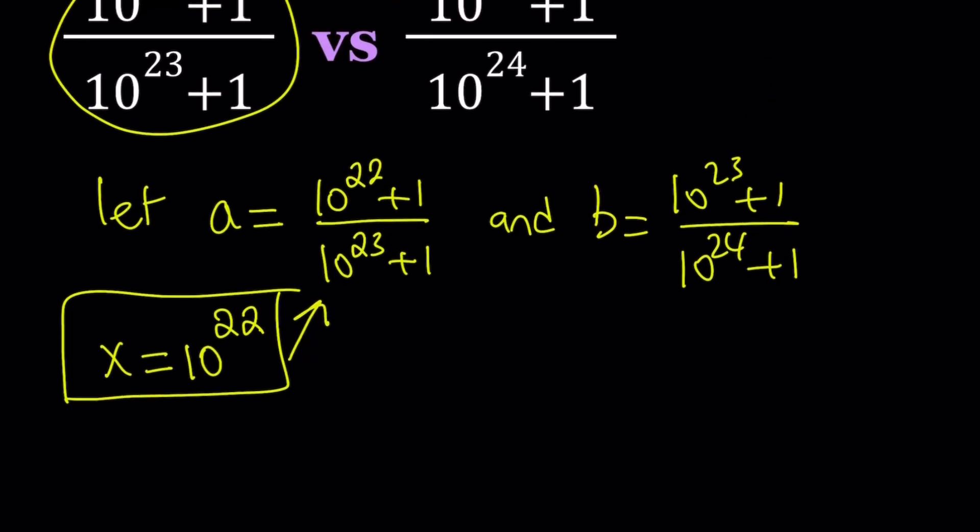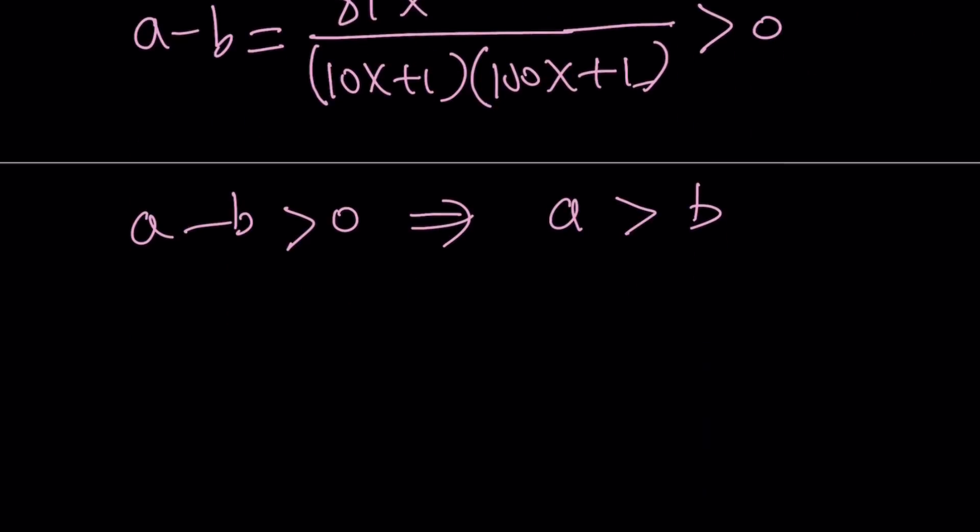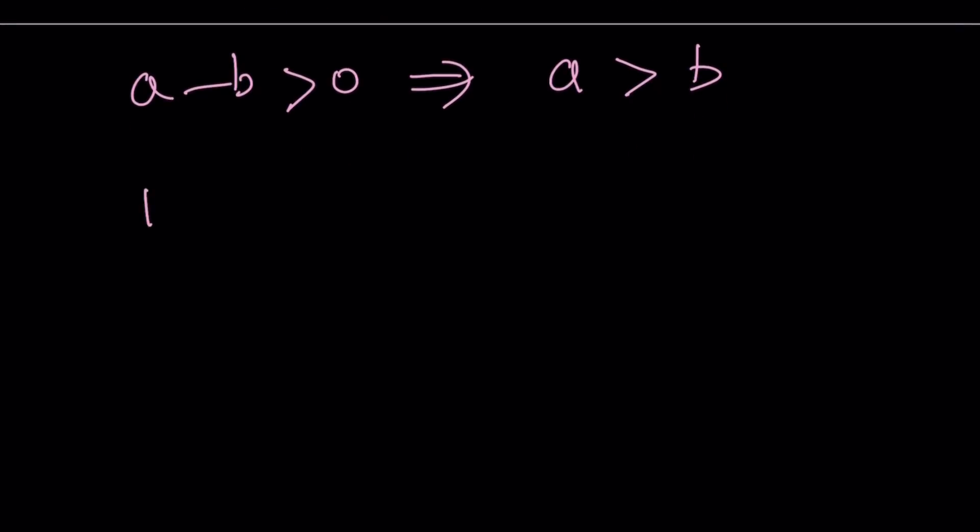Now let's go back and see what the numbers were. So a was the first number, which is 10^22. So we were looking for the greater number. So it's 10^22 + 1 divided by 10^23 + 1, and that's definitely greater than 10^23 + 1 divided by 10^24 + 1. So this is the order in which these numbers are. But let's take a look at the numerical values, and that's also going to confirm the result.